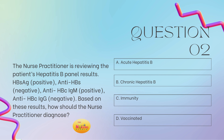All right, you guys. The question states: based on these results, how should the nurse practitioner diagnose? We're reviewing a hepatitis B panel. The HBSAG — that's our surface antigen — is positive. That's letting us know that they have hepatitis B. The anti-HBS is negative, so that's letting us know they do not have immunity or vaccination. You can eliminate C and D here. I always tell y'all: when you're looking at a hep B panel, look at that HBSAG first, then look at your anti-HBS for antibodies. That's going to give you the story right off the top.